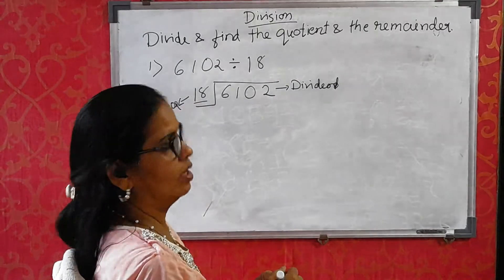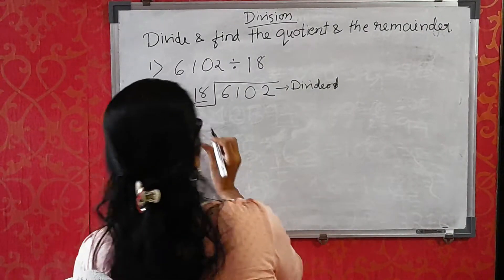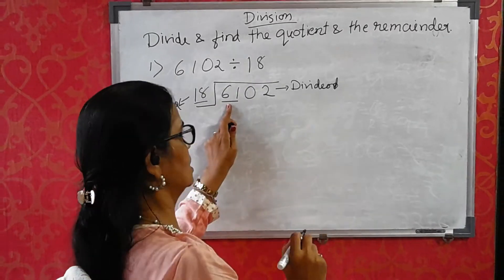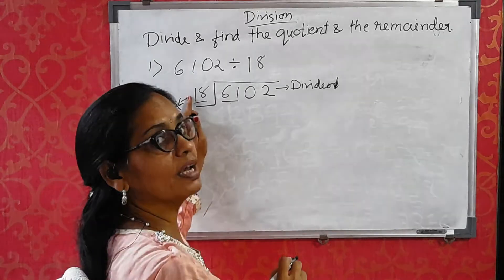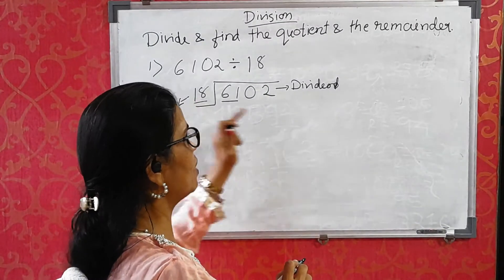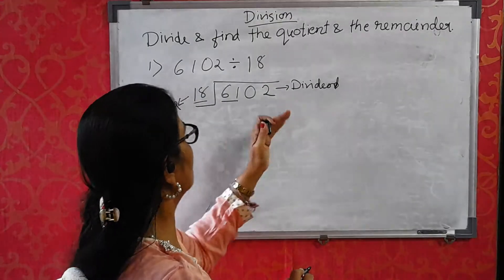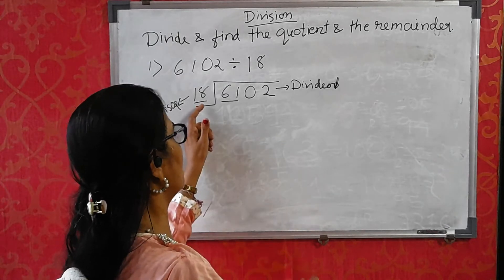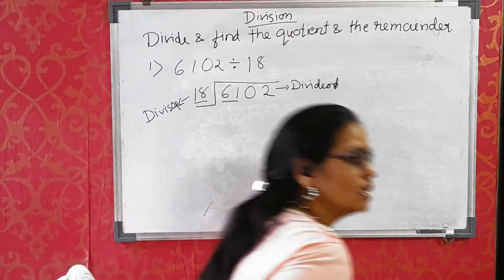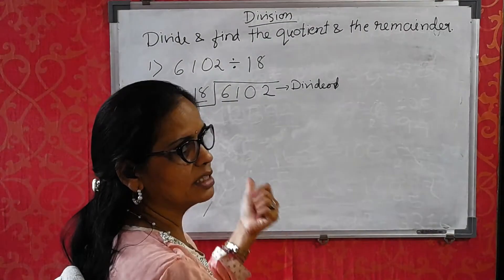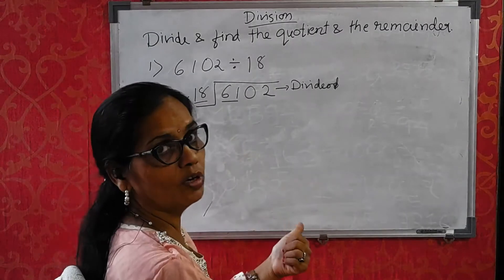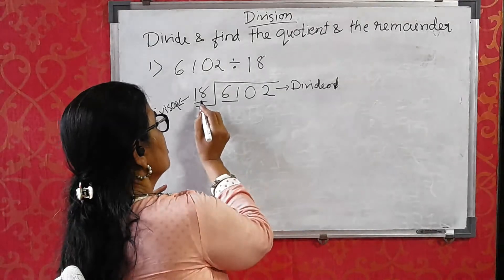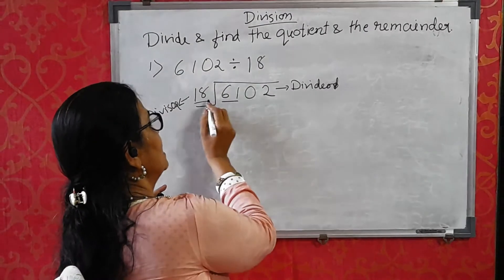First, you have to see the number of digits in your divisor. Here the divisor has 2 digits, so you take 2 digits from the dividend. This 2-digit portion of the dividend should be bigger than the divisor. I am telling you this because it is important for the method. Always this taken portion should be bigger than the divisor — then only we can start with the table. Now in the 18 times table: 18×1=18, 18×2=36, 18×3=54, 18×4=72. Since 72 is bigger than 61, we take 18×3=54.